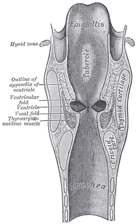Phonation is the production of a periodic sound wave by vibration of the vocal folds. Airflow from the lungs, as well as laryngeal muscle contraction, causes movement of the vocal folds. It is the properties of tension and elasticity that allow the vocal folds to be stretched, bunched, brought together, and separated.